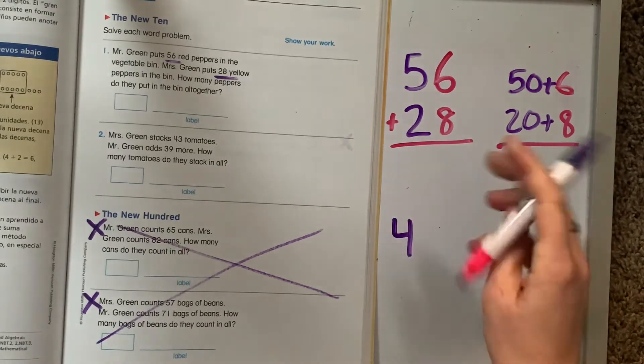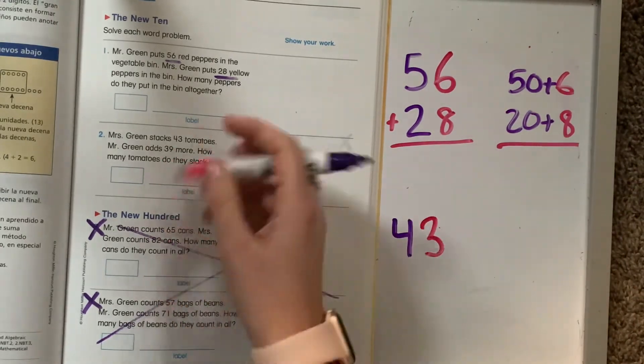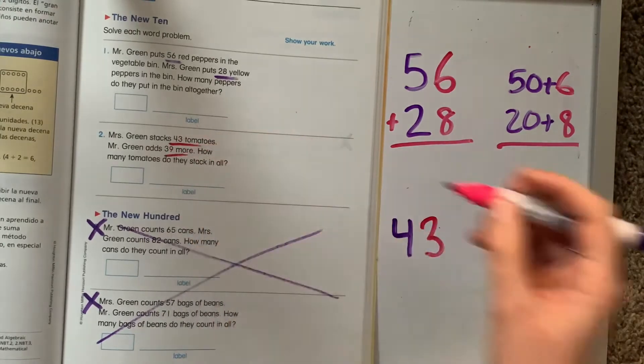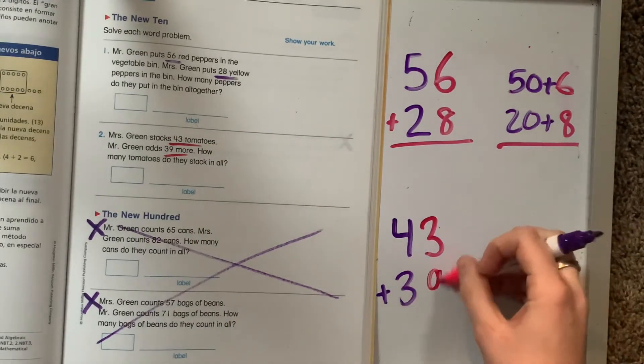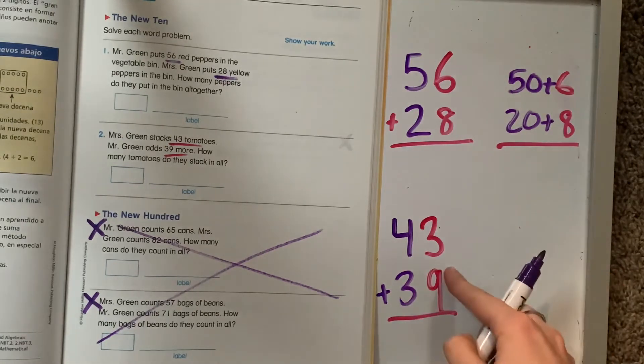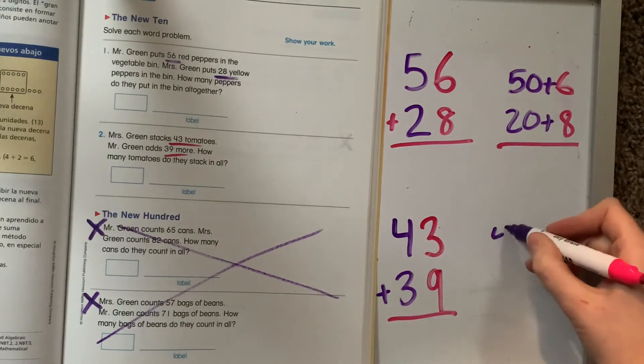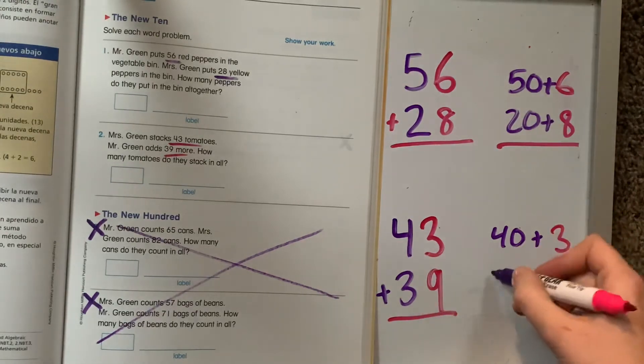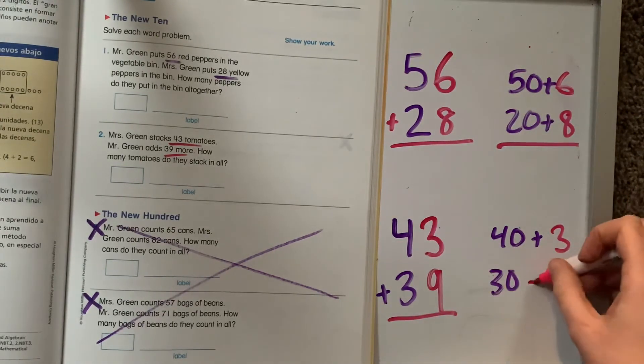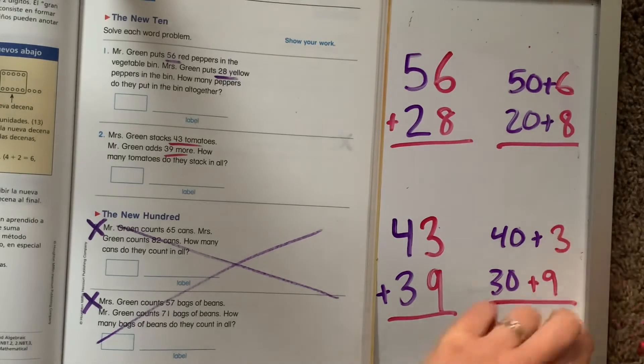This one says Mrs. Green stacks 43 tomatoes. Mr. Green adds 39 more. How many tomatoes do they stack in all? So I'm going to write the equations for this one so that you guys can just do the work on your own. So for this one, it's 43. And then they add 39. If I think about this, I need to think about the expanded form. 40 plus 3 and 39. 30 plus 9. And if I can solve this, then I can solve this.